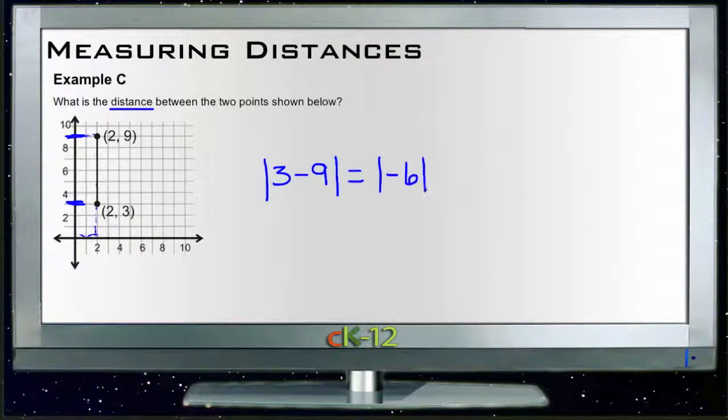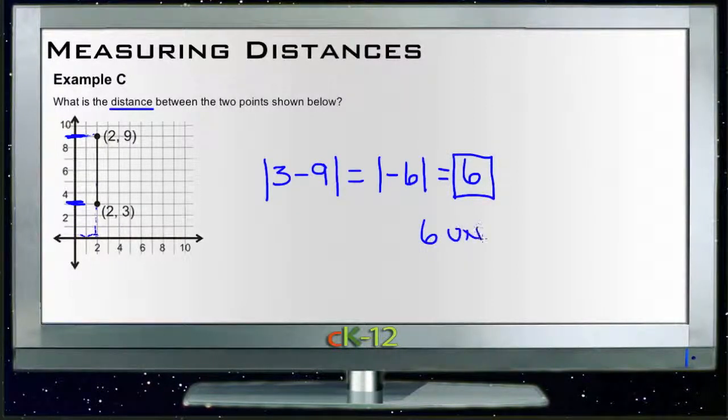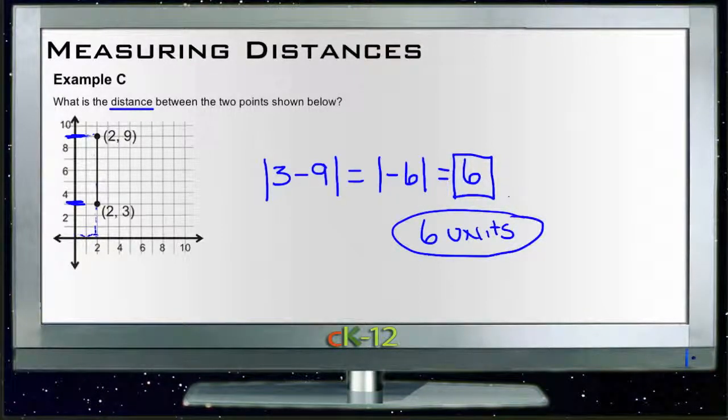So now we're finding absolute value of negative six, which of course is just six. And since there aren't any units marked, we don't have to put any units in our answer, so our answer is just six, or if you like you could say six units. There you go.